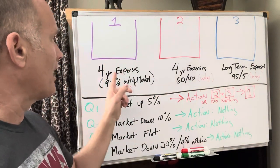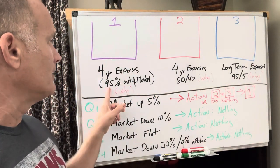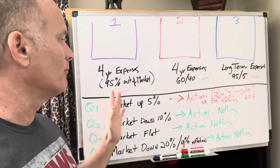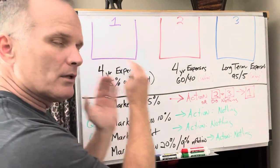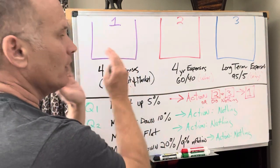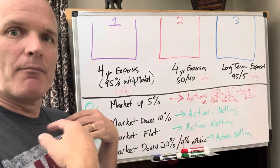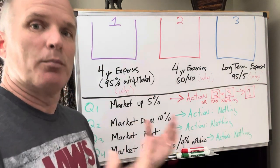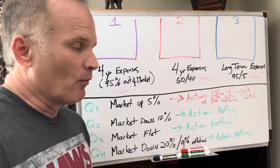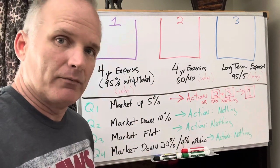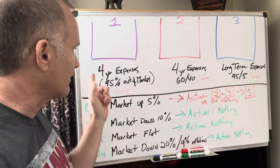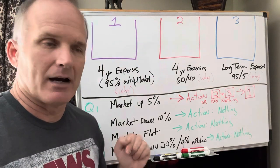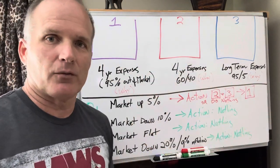So bucket number one, I have four years of expenses. 95% of that is out of the market. What is the purpose of bucket one? Bucket one's purpose is to manage a bear, keep me from making stupid decisions, panicking. When the market goes down by 40, 50%, I think that I got four years of expenses there.